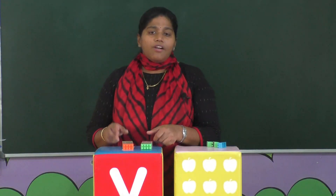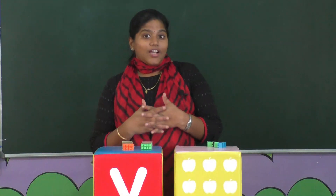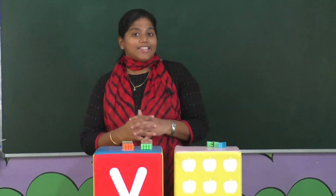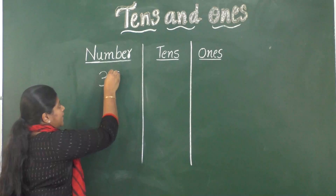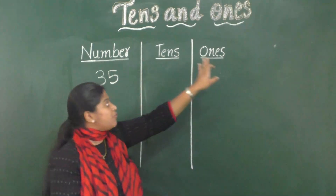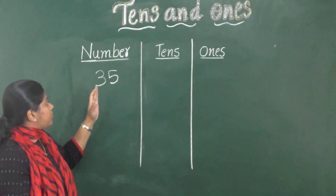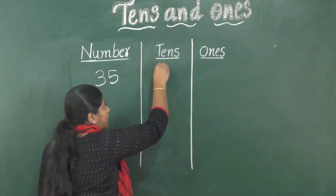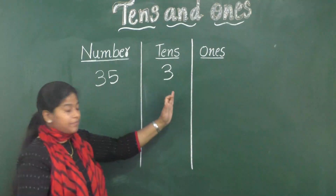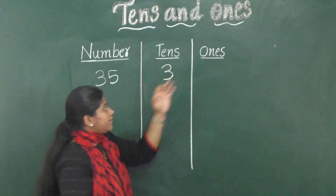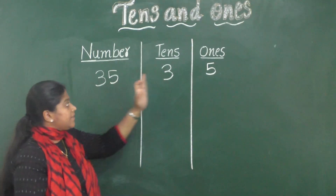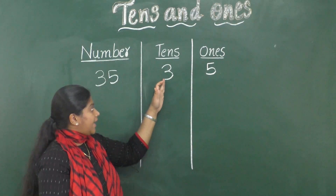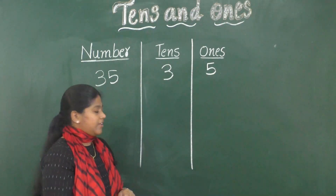Now children, can you tell me what does 3 tens mean? Yes, you are correct — it is 30. 3 tens means 30, and 4 tens means 40. Now let's consider the number 35 and see how to write it in tens and ones place. The number on the left side goes in tens place, and the number on the right side goes in ones place. So 35 we write as 3 in tens and 5 in ones — 3 tens and 5 ones.